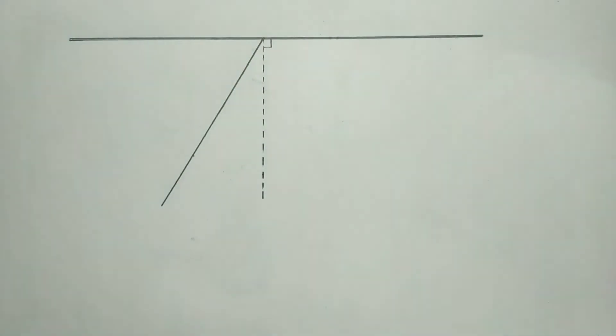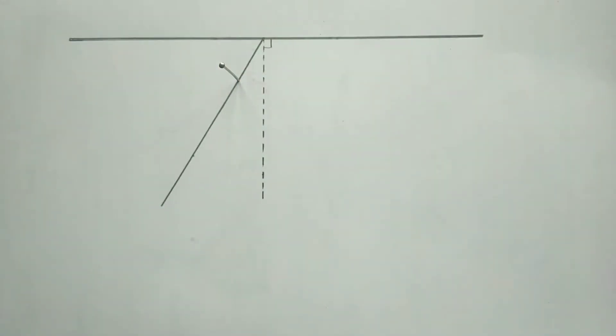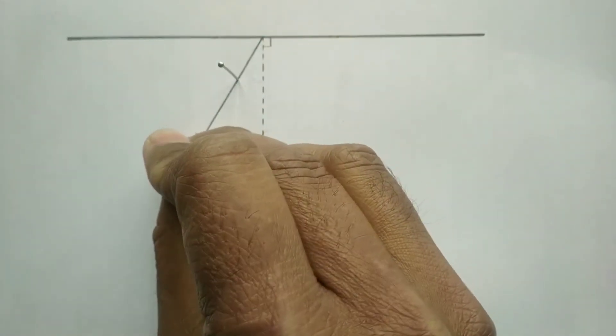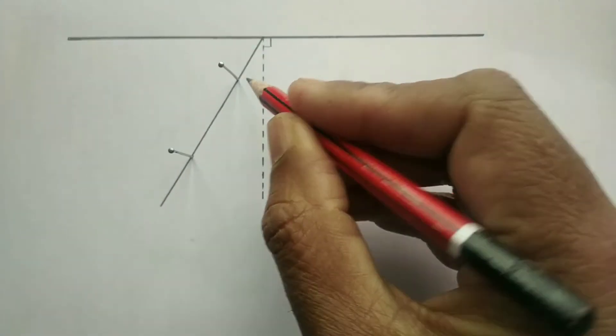Now students, let us fix two drawing pins on the incident ray and it is to be ensured that the pins are vertical and they should have a minimum separation of 8 to 10 cm.